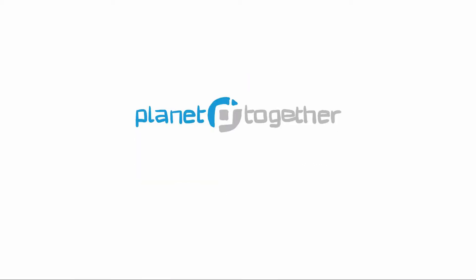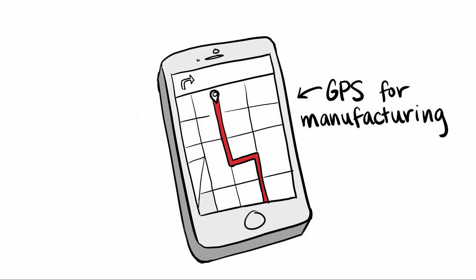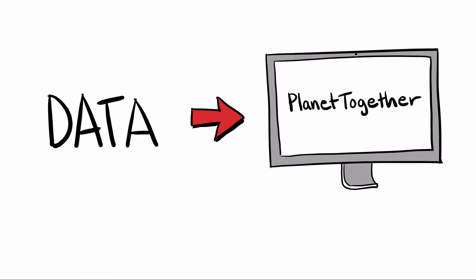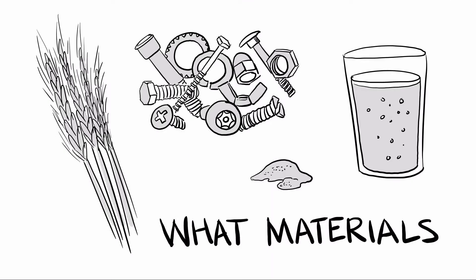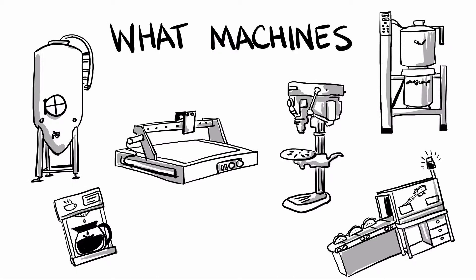Because you could be using Planet Together. It's a GPS for your manufacturing business. First, you load in your factory data to create the map of how work gets done using what materials, by what people, and on what machines.